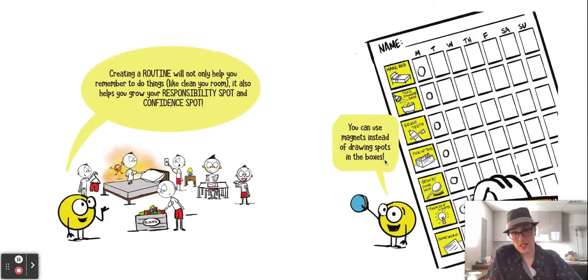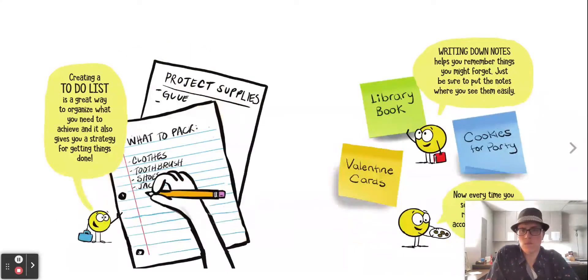You can use magnets instead of drawing spots in all of the boxes. A lot of us have these on our refrigerator or anything magnetic in our house, like a whiteboard. That way you can keep track of what you're doing and what gets done. Creating a to-do list is a great way to organize what you need to achieve and gives you a strategy for getting all the things done.